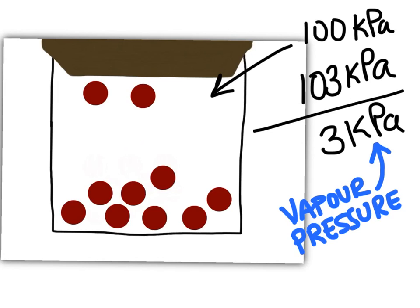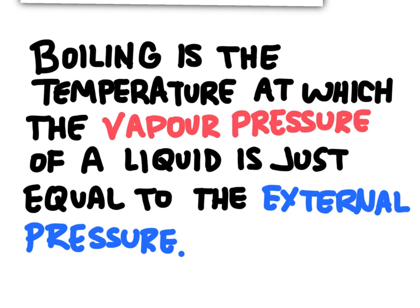So how does this relate to boiling? Well, the scientific definition of boiling says that boiling is the temperature at which the vapor pressure of a liquid is just equal to the external pressure.